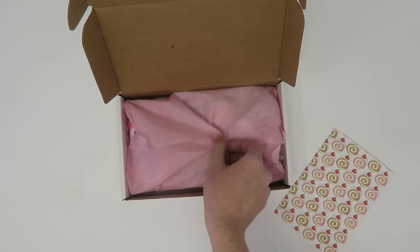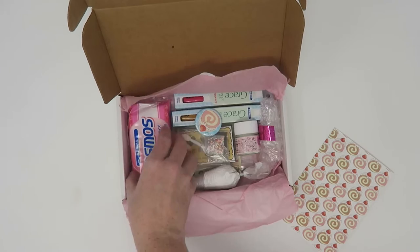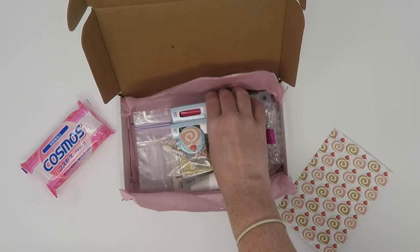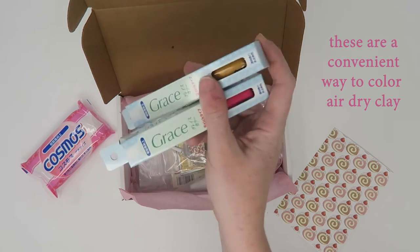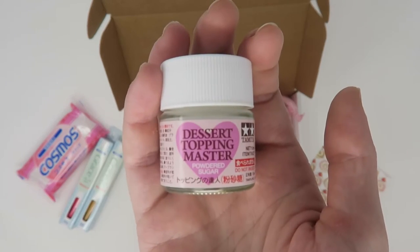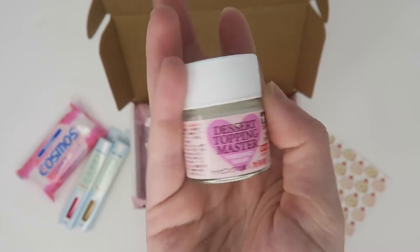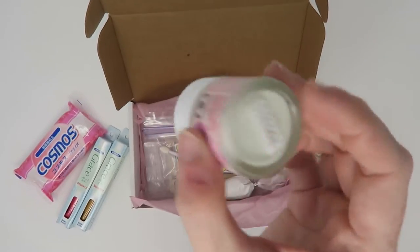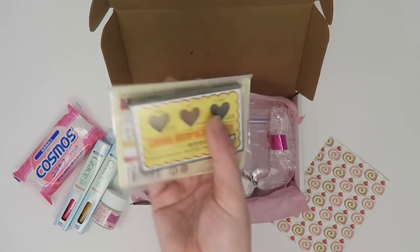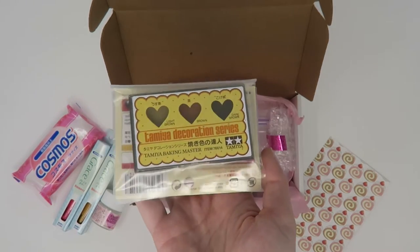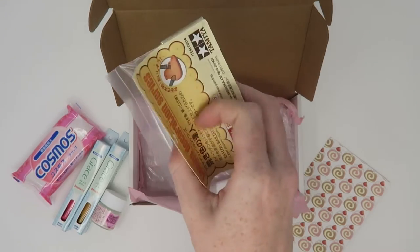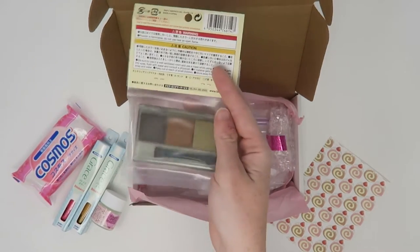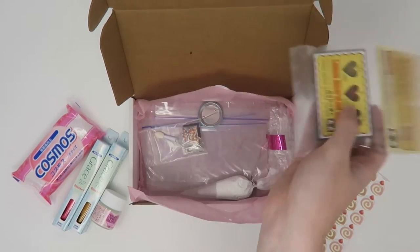Moving on to the items inside the box we have this Cosmos pack of air dry clay, two Grace coloring sticks in pink and light brown, a Tamiya dessert topping master in the powdered sugar version, and from the Tamiya decoration series this baking master set which lets you shade air dry clay pieces to give it a nice baked look. There's three different shades and a little applicator included as well.